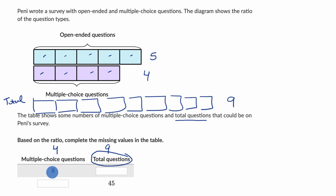So in this first row, we have eight multiple choice questions. So that's two sets of four. So we're going to have two sets of nine total questions. That still is the same ratio. Eight is to 18 as four is to nine.